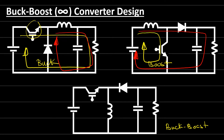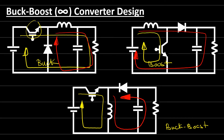For the buck-boost converter, when the active switch is conducting the current flows in one direction, and when the switch is off the energy stored in the inductor keeps the current flowing in the other direction. If you focus on the behavior of the current you will find that we have only one current at the input side and one current at the output side, so there is no privilege for the current to be significantly higher or lower on either side. This may be the reason why this buck-boost converter can either increase or decrease the output voltage simply by changing the duty cycle.